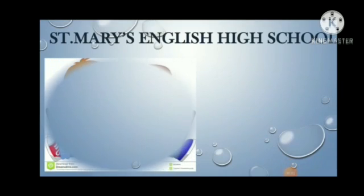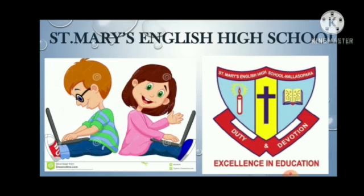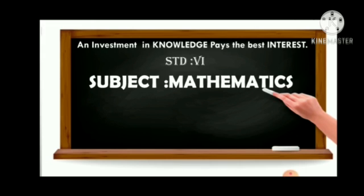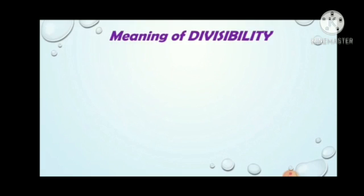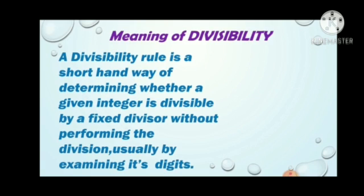Welcome dear children. Standard 6, Subject Mathematics. Children, today we are going to start our chapter number 8, i.e. Divisibility. Let's understand the meaning of divisibility. A divisibility rule is a shorthand way of determining whether a given integer is divisible by a fixed divisor without performing the division, usually by examining its digits. By using the divisibility rule, we can easily find the divisor by just seeing the digits.